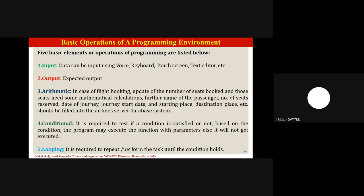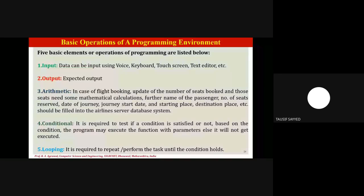Moving forward to the basic operations of a programming environment: whenever we develop a piece of code, we give certain input to the system, the system processes that input and generates output. Once the output produced by the system matches the required output expected by the user, that code is called a successful code — meaning the objective behind the code has been successfully accomplished.